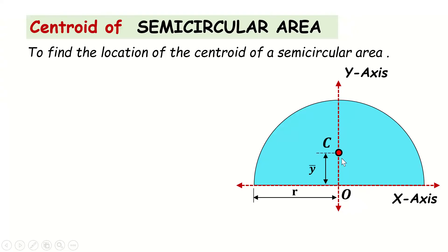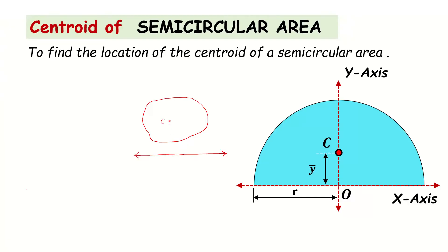We need to find the y-coordinate of the centroid of the semicircular area. Let me remind you of the procedure to find the centroid of any plane figure, which we have seen in a previous discussion. Suppose we have a plane figure and we would like to locate its centroid with respect to a horizontal axis — basically we want to find y-bar, the y-coordinate of the centroid.